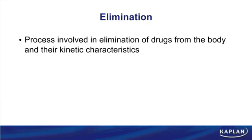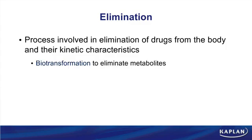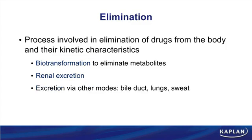Part 4 of pharmacokinetics involves drug elimination. There are two main ways that we can eliminate drugs: biotransformation — in other words, liver metabolism to eliminate the metabolites — or renal excretion. The liver and the kidneys are clearly the two most important organs for drug elimination. They're not the only organs, but they are the two most important ones.